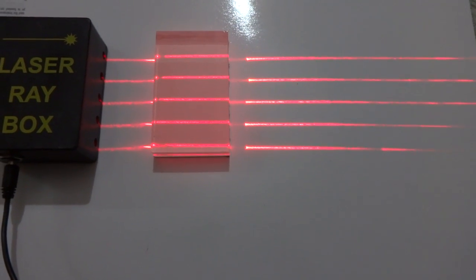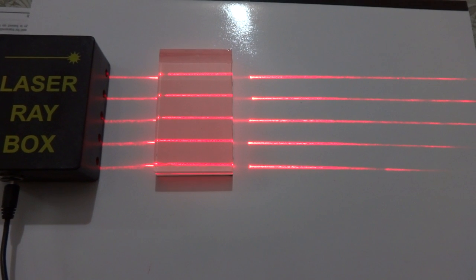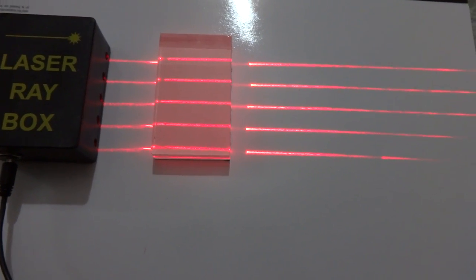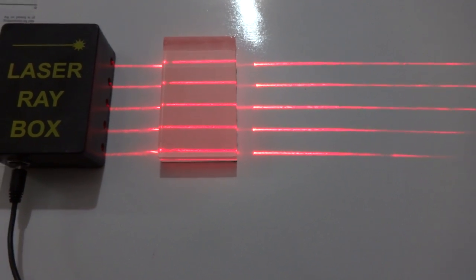For example, when we go on a very sunny day, then you can see that there is some water layers formed over the road.